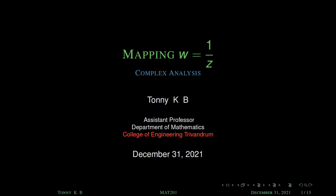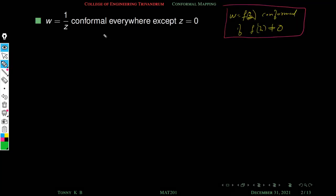In this session we will discuss the transformation w = 1/z and its properties. The first property: w = 1/z is conformal everywhere in the complex plane except at z = 0.